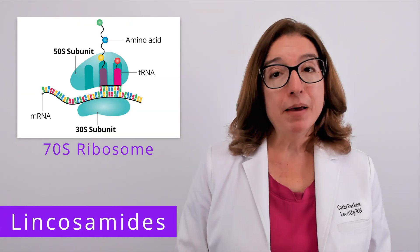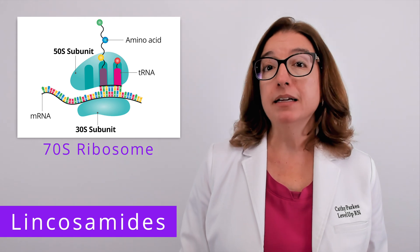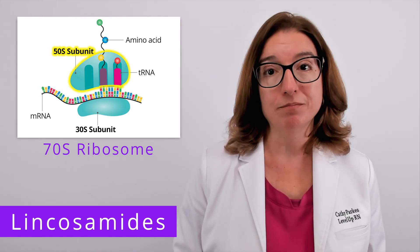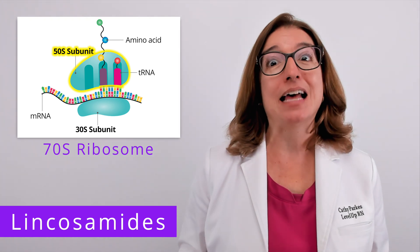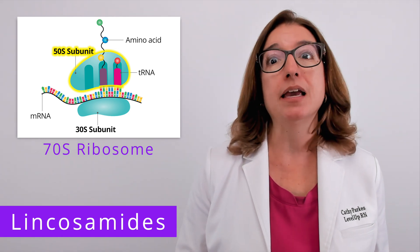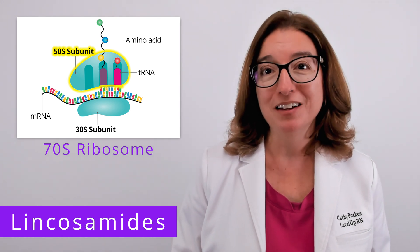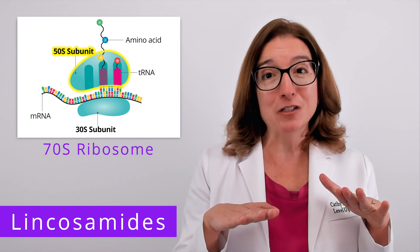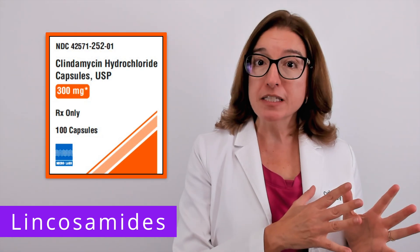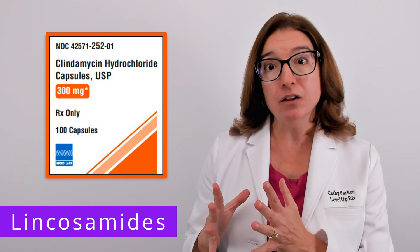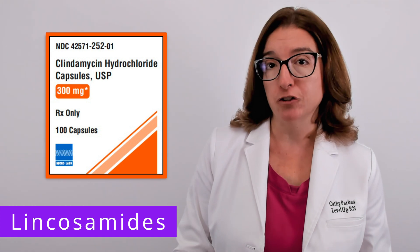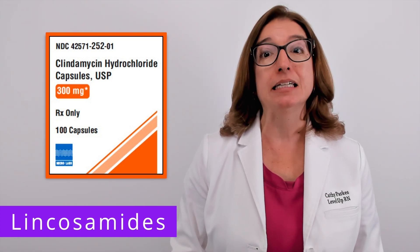Lastly, we have lincosamides. Like macrolides, lincosamides bind to the 50S subunit of the ribosome and prevent peptide bond formation. There are differences in exactly where they bind on the 50S subunit and exactly how they inhibit peptide bond formation, but chances are you do not have to know those differences for your micro class. Lincosamides can either be bacteriostatic or bactericidal at high concentrations. And unlike macrolides, they are narrow spectrum. An example of a lincosamide is clindamycin.